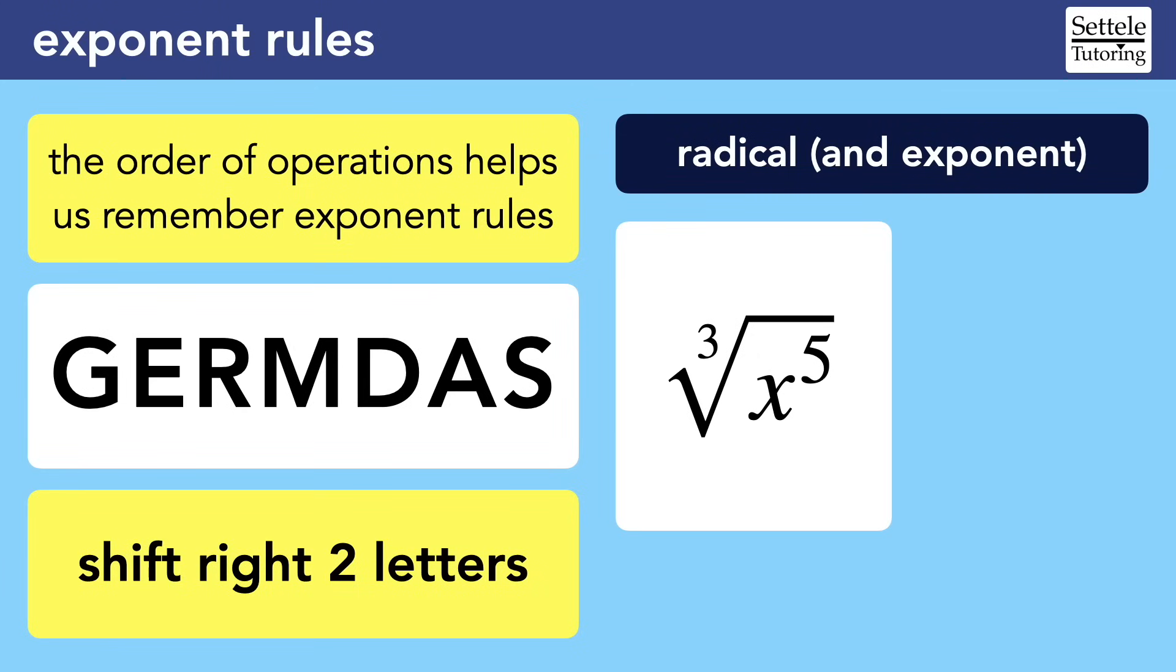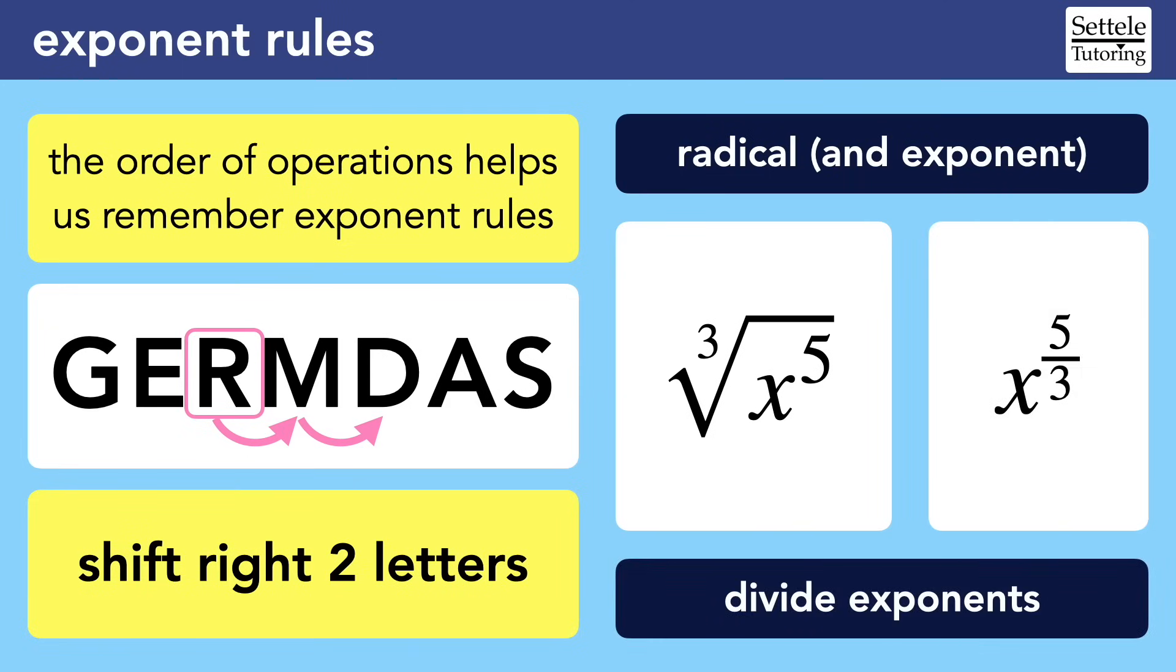This situation looks a little different because we don't seem to have two exponents. But actually, GERMDAS reminds us that exponents and radicals are basically the same thing. GERMDAS pairs those letters together, just like multiplication and division, or addition and subtraction. Go to the R in GERMDAS to be reminded what to do. Shifting right two letters, we know to divide the original exponent by the radical. So the cubed root of X to the fifth is the same as X to the five-thirds.